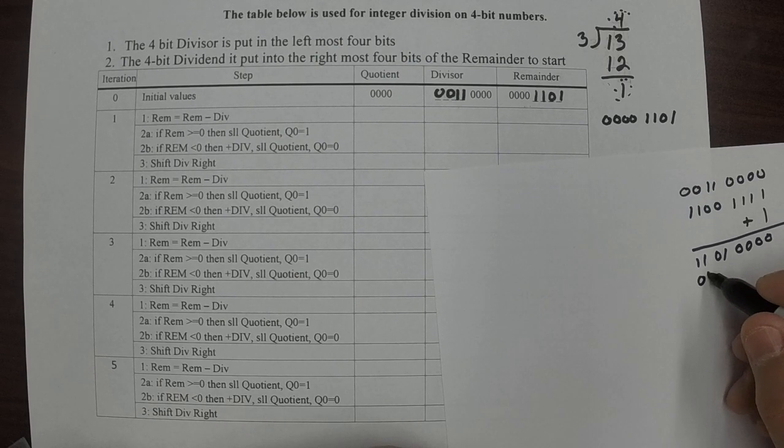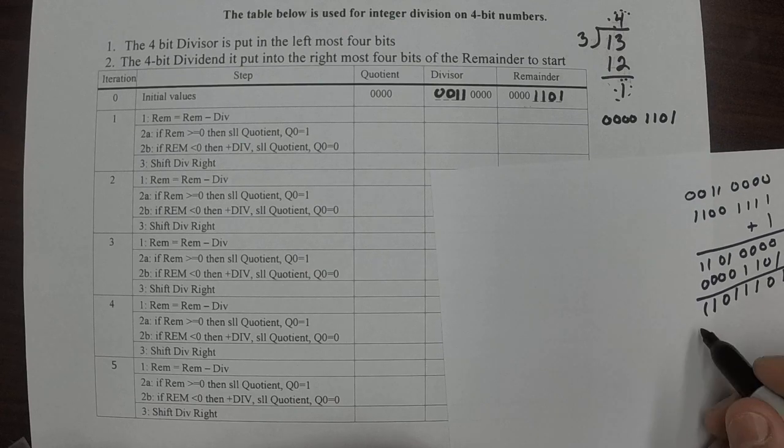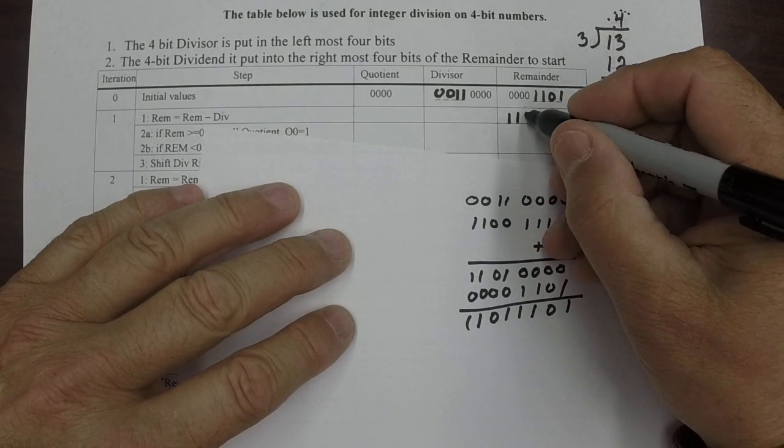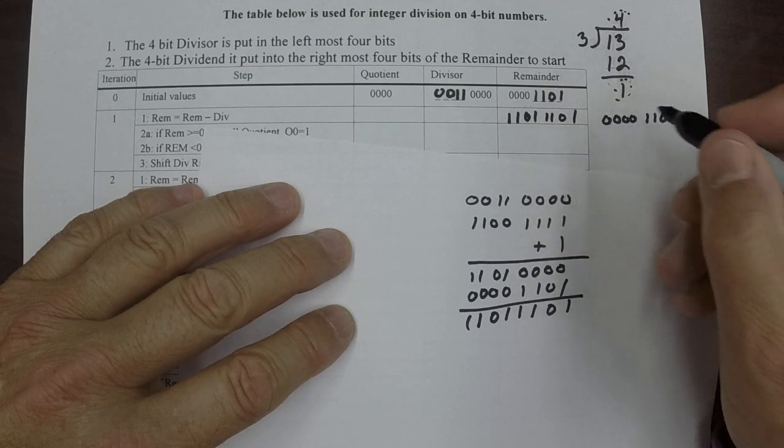So we'll put this number right here. Then add one to it. So this is the answer. This is the remainder minus the divisor. We're going to transfer that number up here: one, one, one, zero, one.